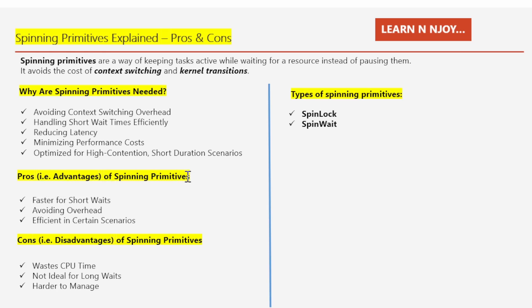Now let's talk about the pros — that is, the advantages — of spinning primitives. The first advantage is that spinning is faster for short waits: if the resource will be available very soon, spinning can be quicker than putting the task to sleep and waking it up later. The second advantage is avoiding overhead: spinning eliminates the extra steps involved in pausing and waking up tasks, which saves time. The third advantage is efficiency in certain scenarios: when many tasks are competing over resources for short periods, spinning can reduce delays.